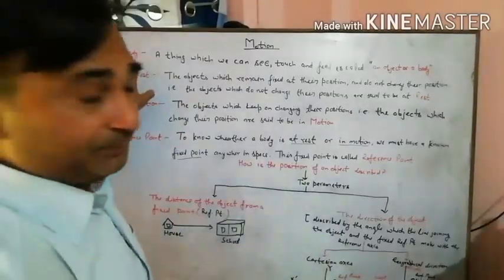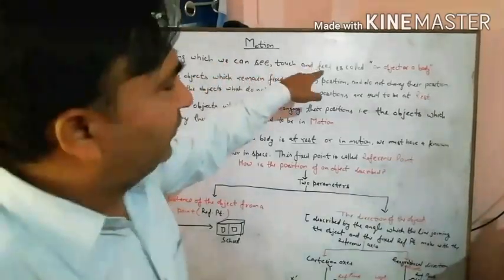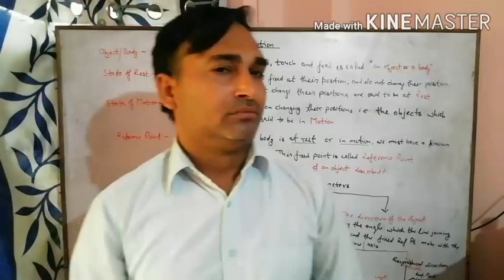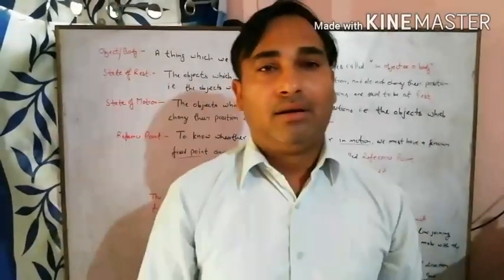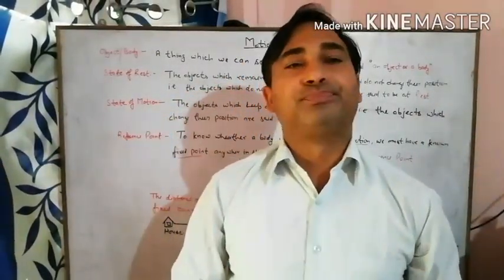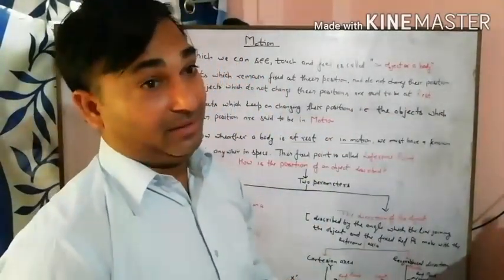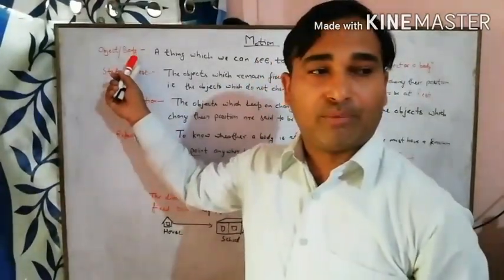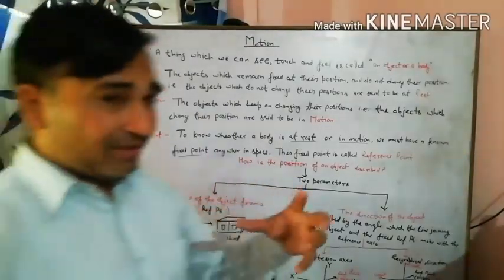An object or body is a thing which we can see, touch, and feel. How do you know that something is a stone or a ball? When you touch it, when you see it, and when you feel it — then you can say it is an object or a body.